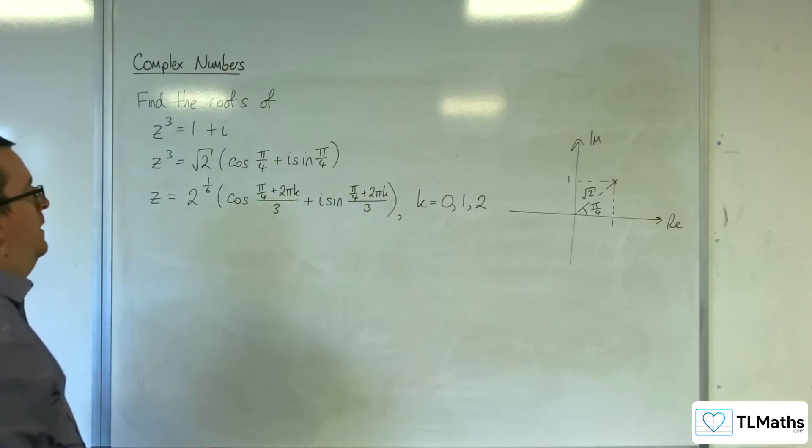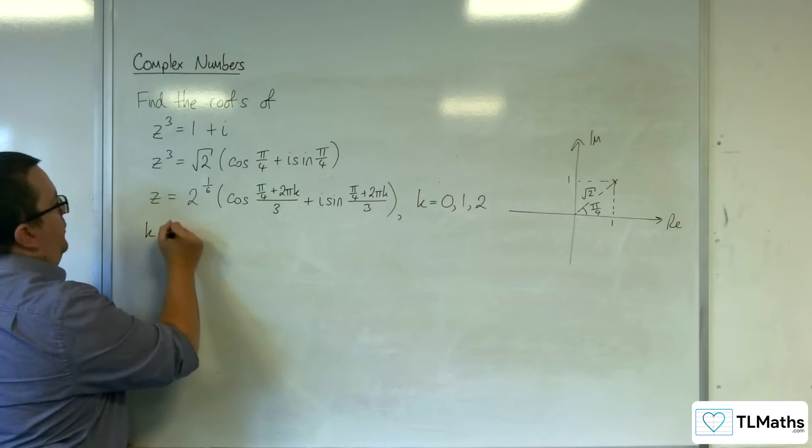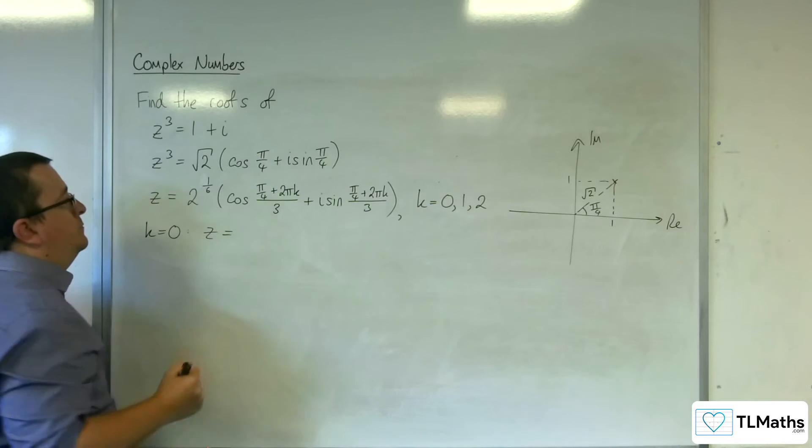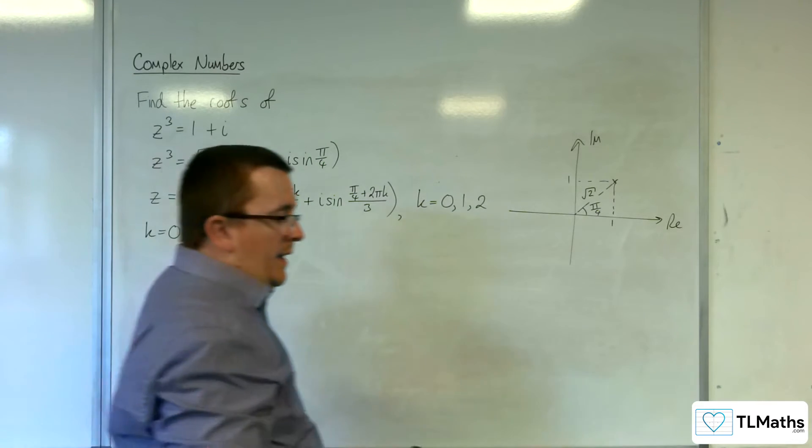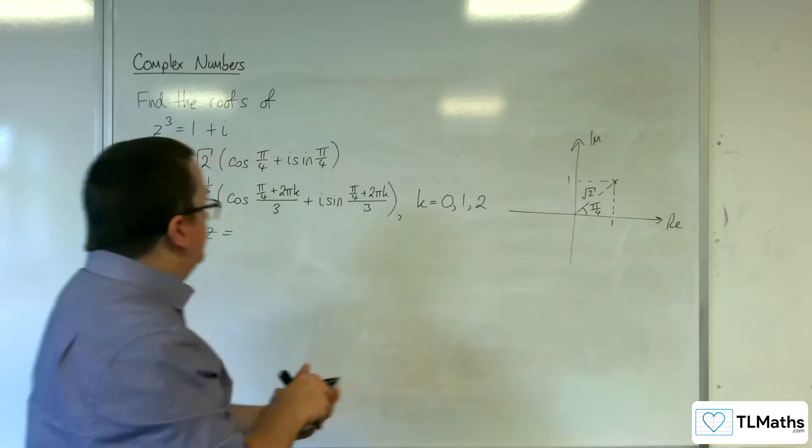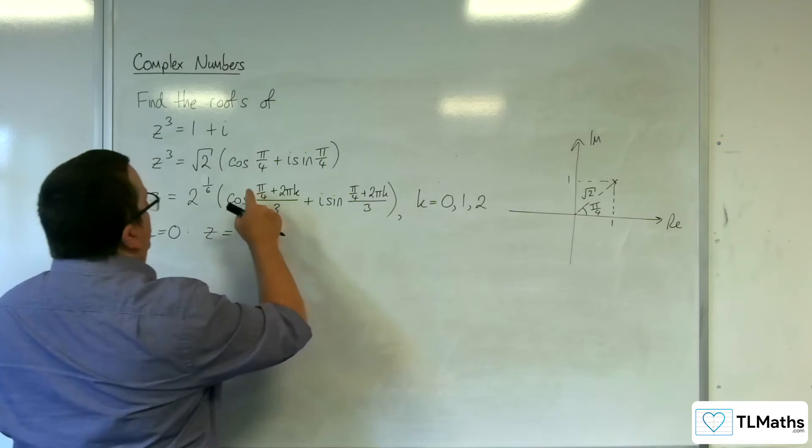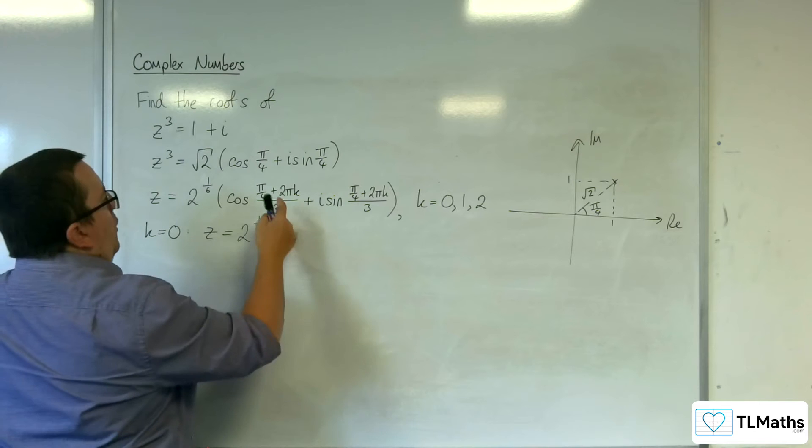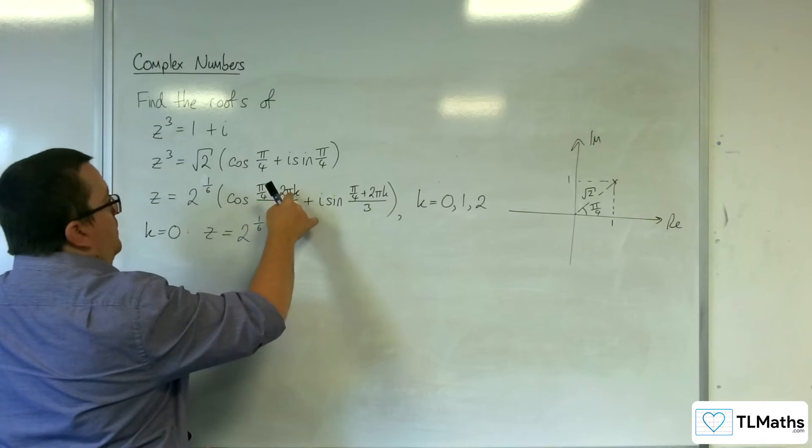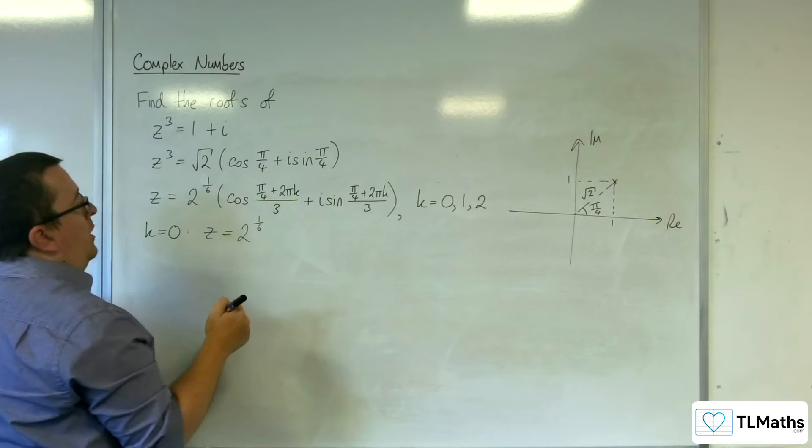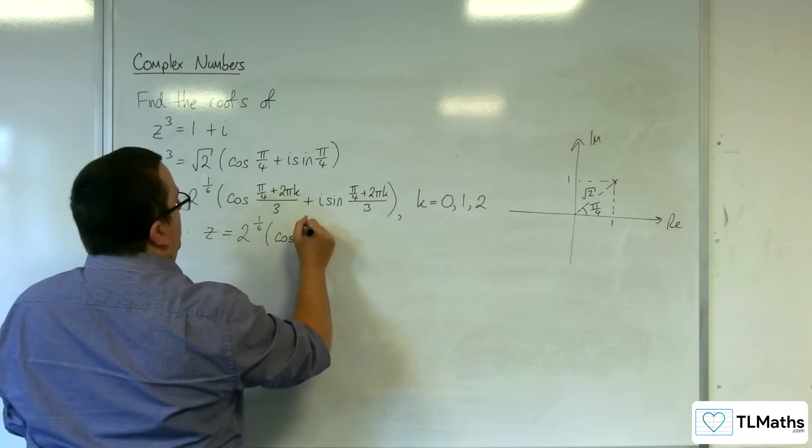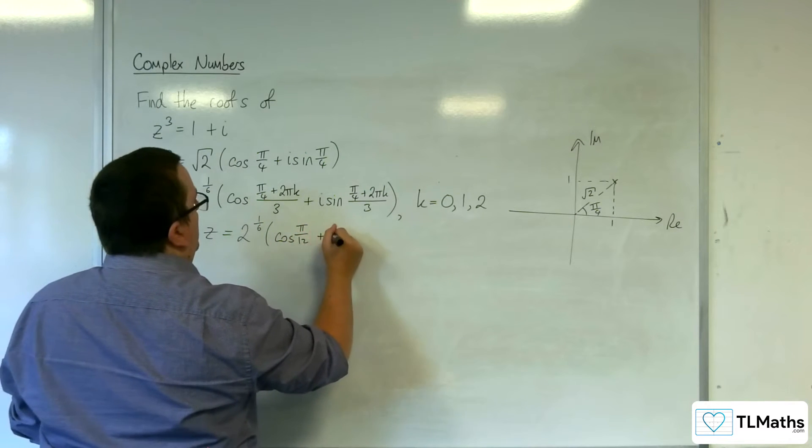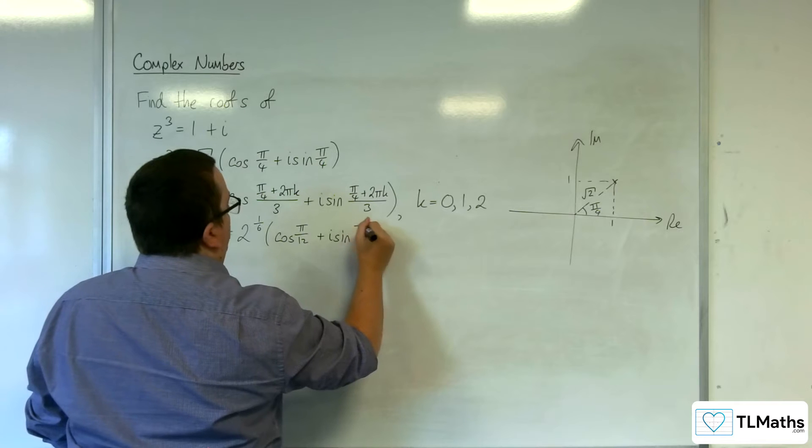So k is equal to 0. When k is equal to 0, we're going to get 2 to the power of 1 sixth of, we've got pi over 4 plus 0 over 3, so cosine of pi over 12 plus i sine of pi over 12.